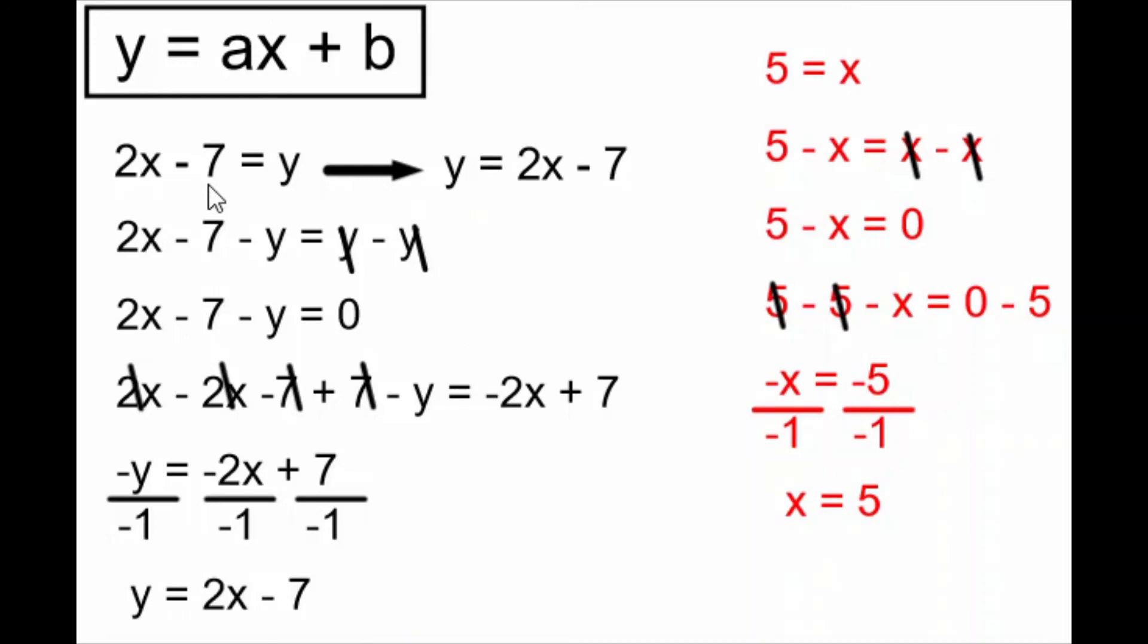And I have achieved the same thing. I have written 2x minus 7 equals y backwards as y equals 2x minus 7. But I'm showing how I followed all of the rules of algebra in order to do that. Of course, once we understand this, we don't show all of these lines of algebra. We just realize we can take 2x minus 7 equals y and write it backwards. Remember that you can write any equation backwards any time you want.